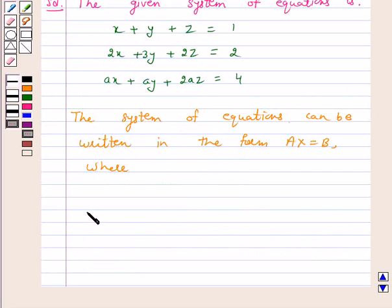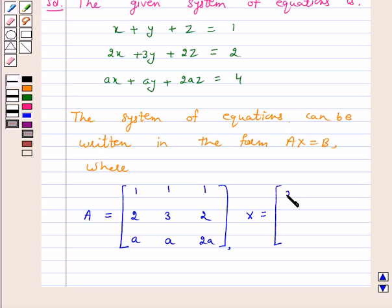A is equal to the matrix 1, 1, 1; 2, 3, 2; a, a, 2a. X is equal to the column vector x, y, z and